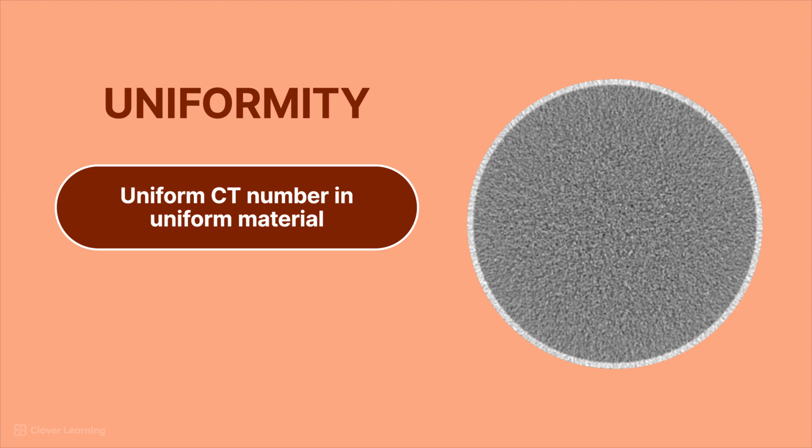In other words, all of the CT numbers should be uniform. In this uniformity phantom that we're looking at to the right, this is a water phantom. And if we place an ROI over the center of the water phantom, we might get something like three Hounsfield units. If the scanner has good uniformity, that means that if we place the ROI on the edge of the phantom, we should still get something very, very close to the same Hounsfield units.